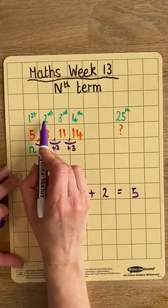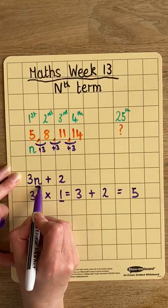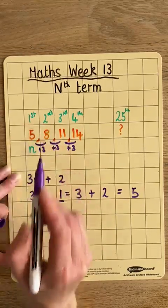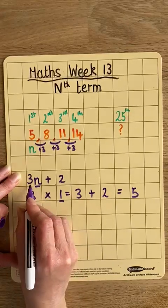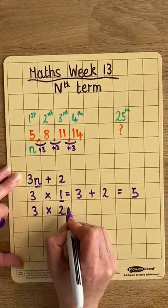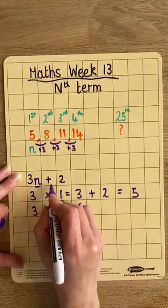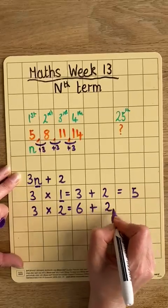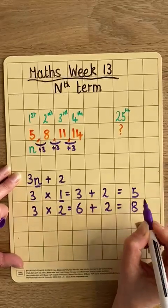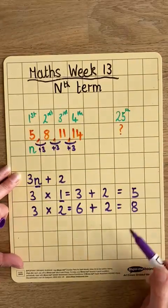Let's try it for the second term. So this time we substitute n for 2, meaning the second term. 3 times 2 equals 6, and then add 2, equals 8. And our second term is 8. So this pattern works.